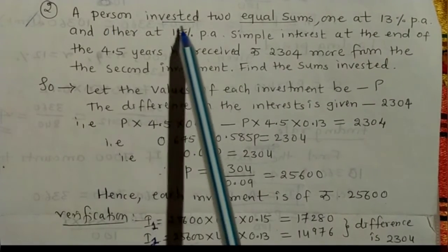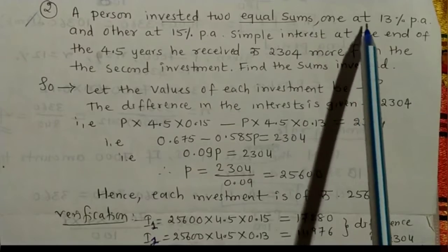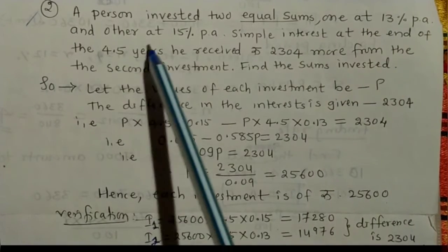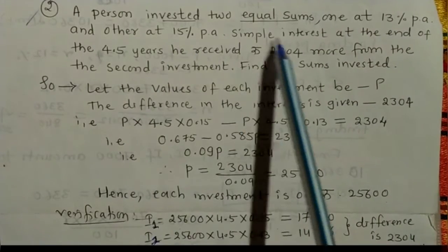Let us learn one problem. A person invested two equal sums, one at 13% per annum and other at 15% per annum.